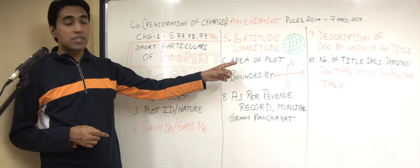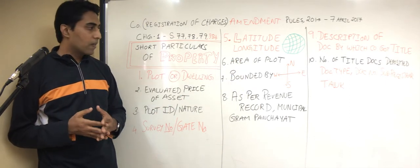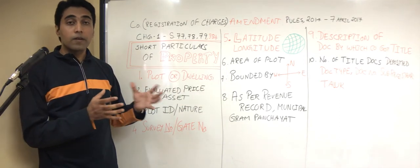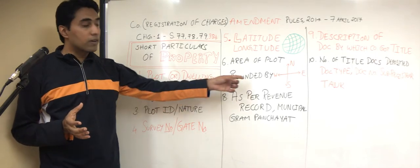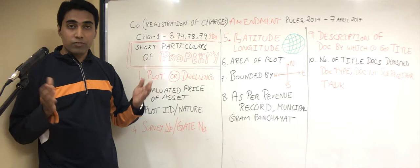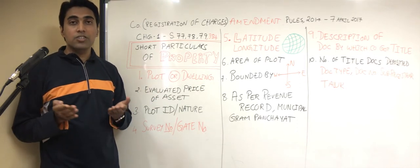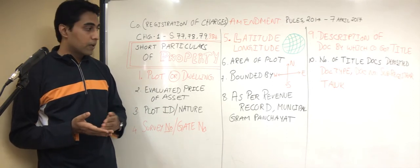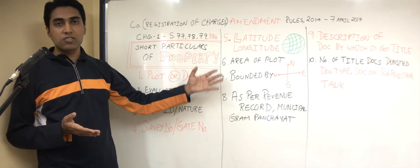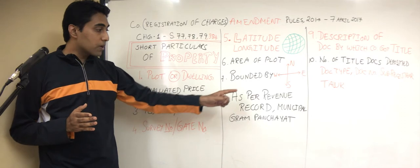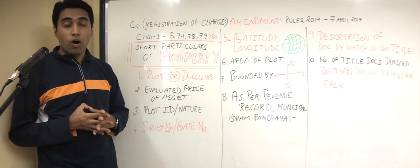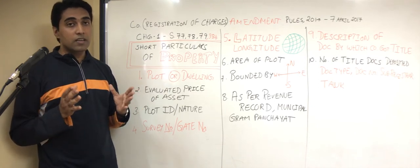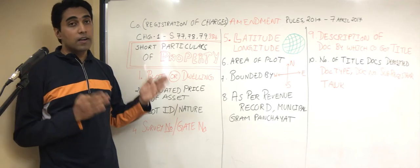The next disclosure relates to the area of the plot — how many square meters, etc. They also ask what the property is surrounded by, which we call 'bounded by' — that is, for the north, south, east, and west of the property, what are the neighboring locations, whether a building, a road, or an open plot. All these disclosures — the seven points discussed — must be as per revenue records, municipal records, or gram panchayat records if the property is in a village area. The disclosure requirements are much, much higher under the new Form CHG-1.